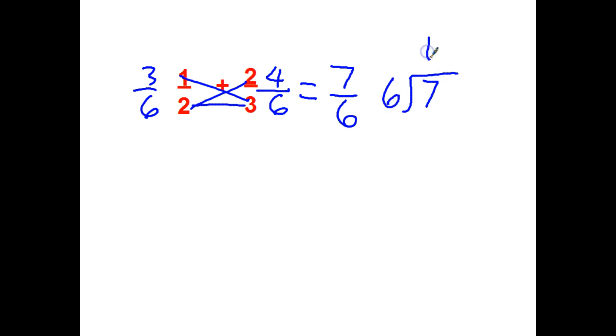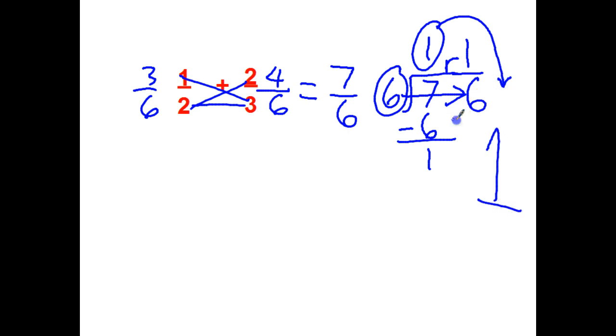So how many 6's in 7? It goes one time. 1 times 6 is 6. Remainder 1. I tell the kids to make sure that they bring that 6 over there and it kind of writes itself. Here's my whole number. Big 1 in my fraction part. It is right there. 1 sixth. And the fraction is as simple as it can be. So that would give me 1 and 1 sixth.